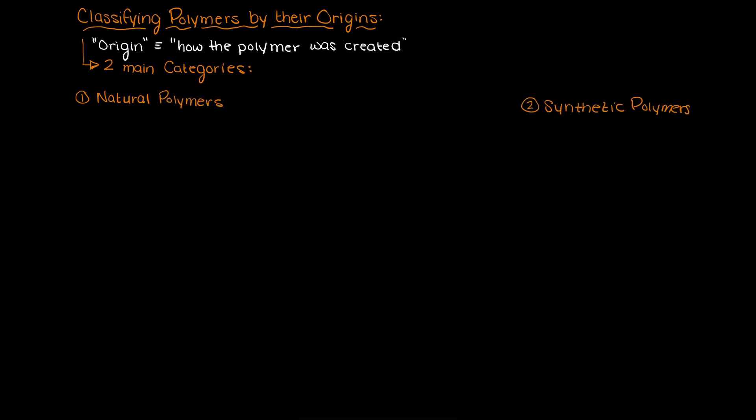Let's first look at natural polymers, as that is where polymers all began, so it seems fitting that we should start here. Natural polymers are polymers that are naturally occurring in nature, so there is no human interaction needed for their development.